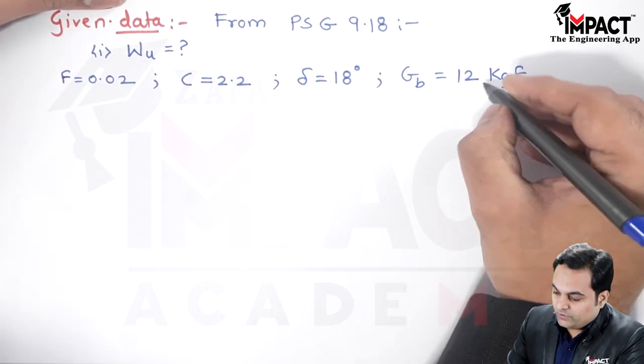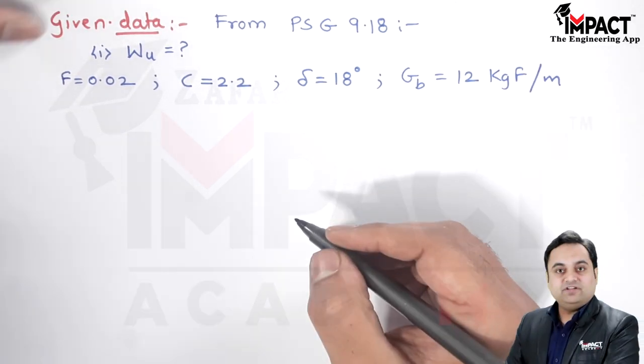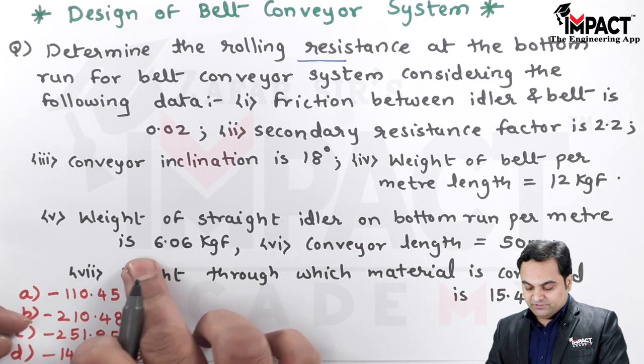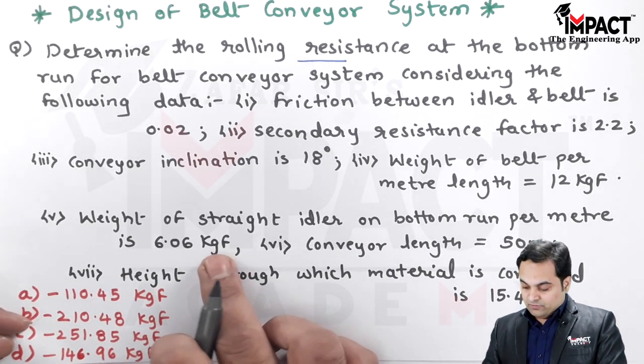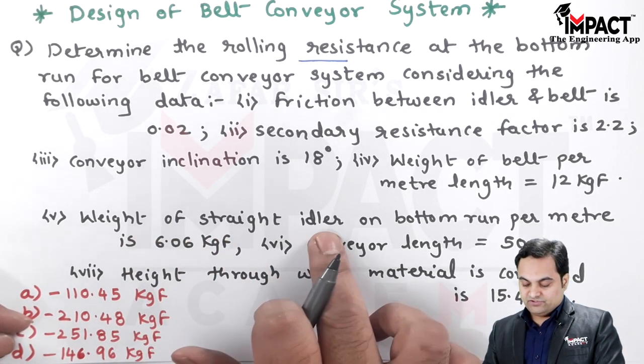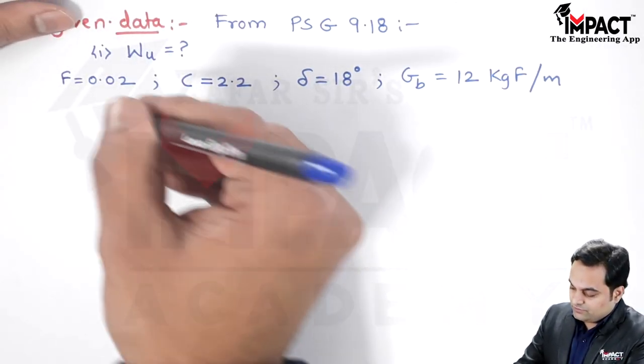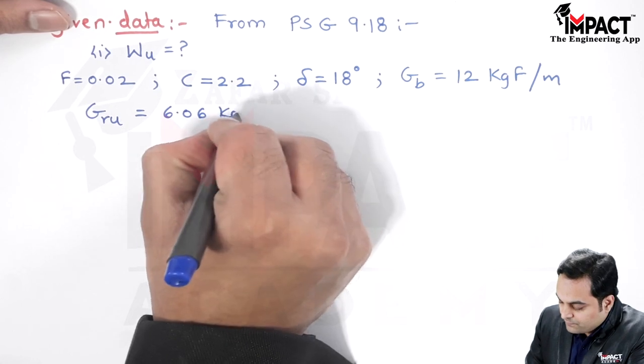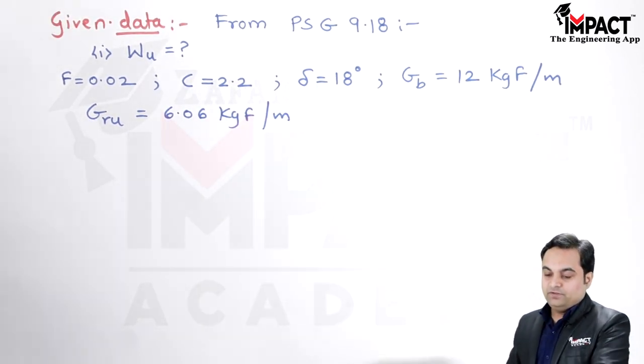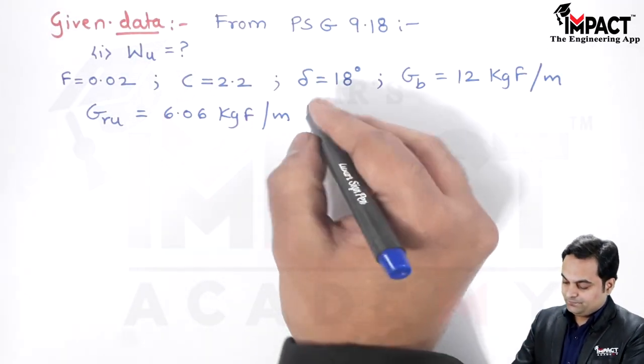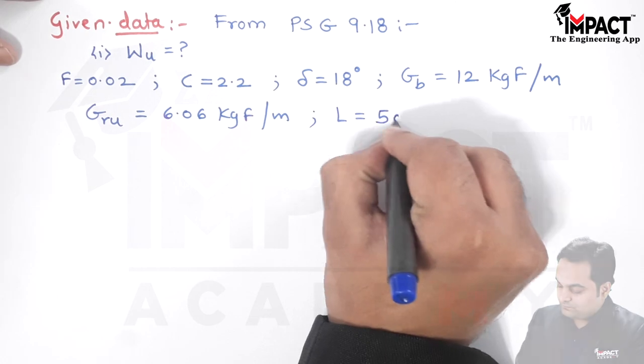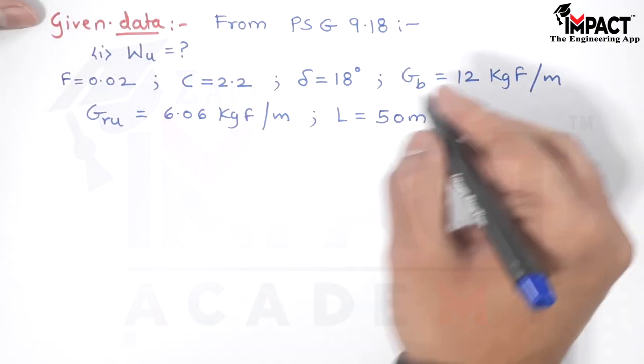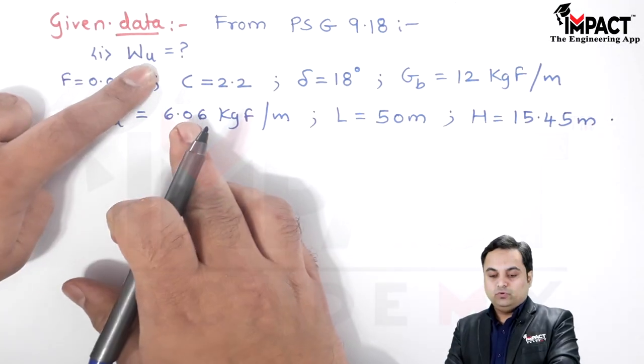That is 12 kgf per meter. Next, the weight of the straight idler on the bottom run per meter is 6.06 kgf per meter, denoted by G suffix ru. The conveyor length is given as 50 meters. The height through which the material is conveyed is 15.45 meters, denoted by capital H. We need to know W suffix u, the rolling resistance on the bottom run.